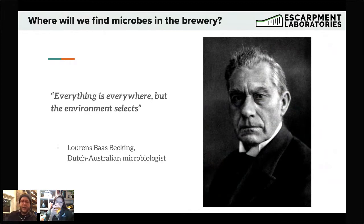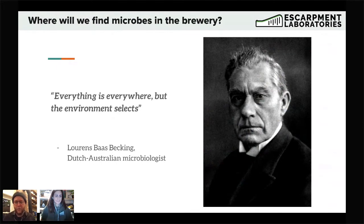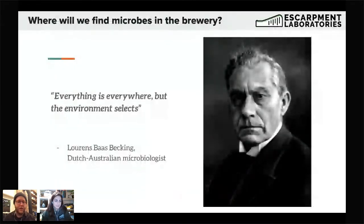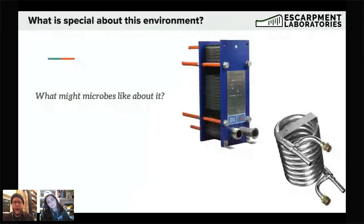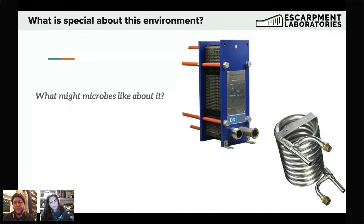Brettanomyces remains one of the mysteries in microbiology — we never find it in the wild and no one knows its natural habitat. Yet it's gotten really good at colonizing oak barrels, wine ferments, and beer ferments. Keeping in mind that microbes need water, sugar, and nitrogen — what kind of environments in a brewery might they thrive? Take a heat exchanger: wort flows through, cooled by water on the other side. What might microbes like about a heat exchanger, even if relatively clean?